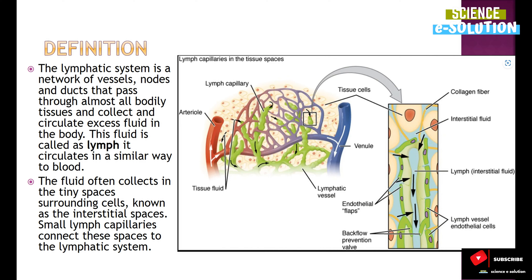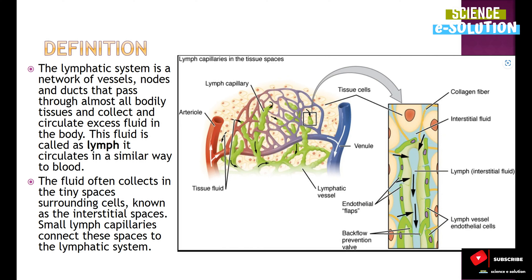Small lymph capillaries connect the interstitial spaces to the lymphatic system. Lymph is collected in the interstitial spaces, and lymph capillaries take this lymph from the interstitial spaces into the lymphatic system. The lymphatic system then drains this lymph into the circulatory system or into the blood capillaries.